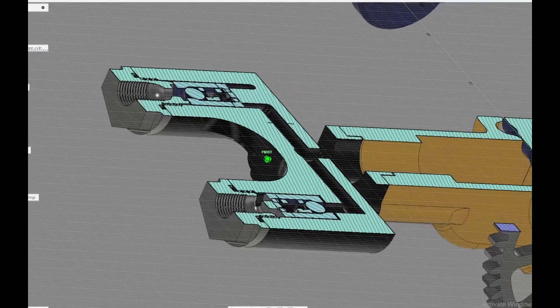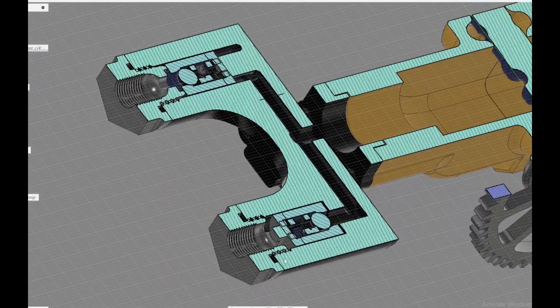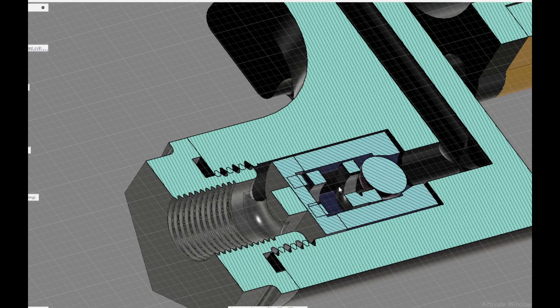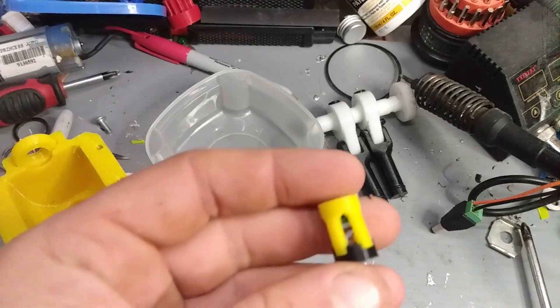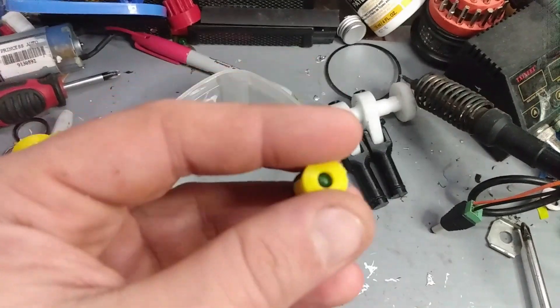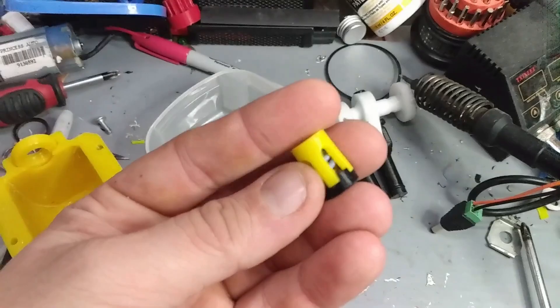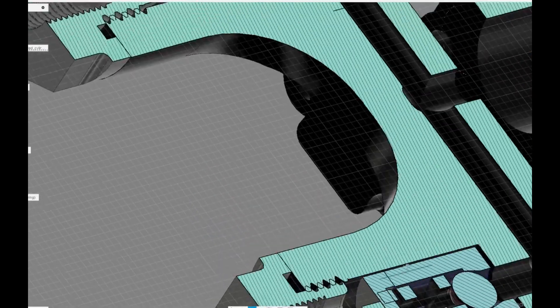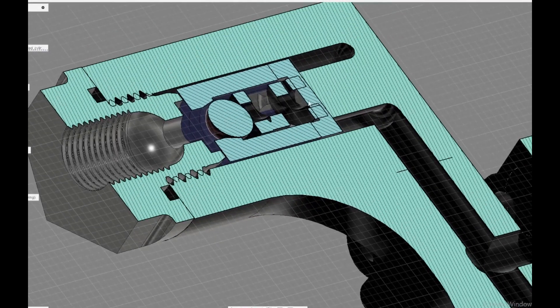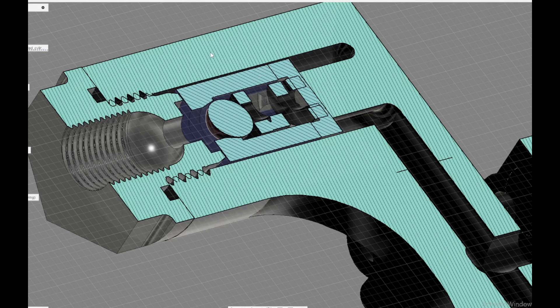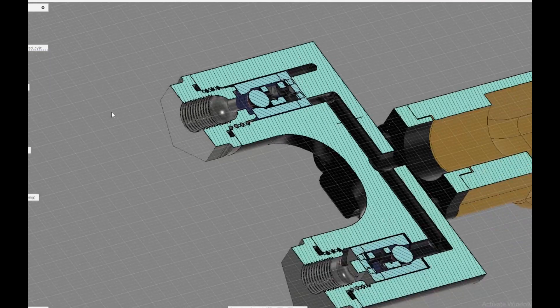As you can see in this head design, there is a passageway for two cartridge check valves that are also 3D printed, and plugs on the end that would screw on and allow access to those check valves. Now this design plans on using the same cartridge for both inlet and outlet, so obviously one's got to be upside down and one's got to be upside right.